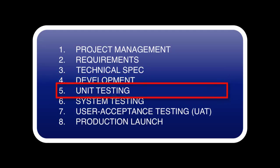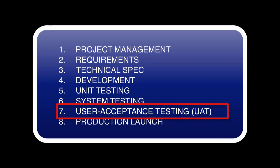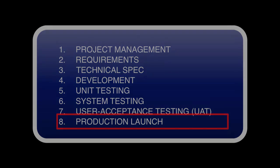Once they're done with development, they move to unit testing where the individual pieces are tested. Then the next stage is system testing, where you take all those individual pieces and test them together to make sure they all work — including, if you're using something like Salesforce, testing related internal systems that tie into it. Then the tech group transitions the work to the business group for user acceptance testing to make sure it meets all their requirements. And then the last step is the production launch.